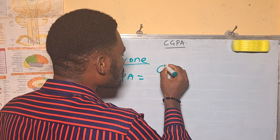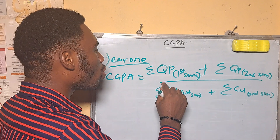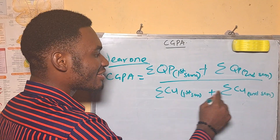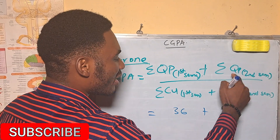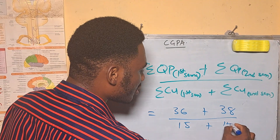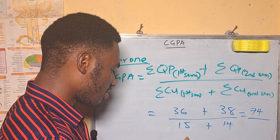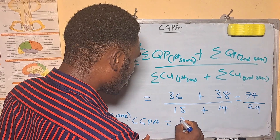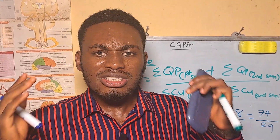For year one, CGPA equals the total quality points for first and second semester divided by the total credit units for both semesters. For example, first semester quality points were 36; assuming second semester quality points were 38, and first semester credit units were 15 and second semester 14 — that gives us 74 over 29, which equals 2.551. That is your CGPA for year one.